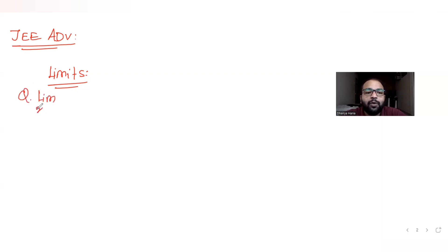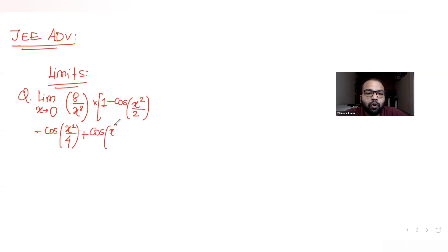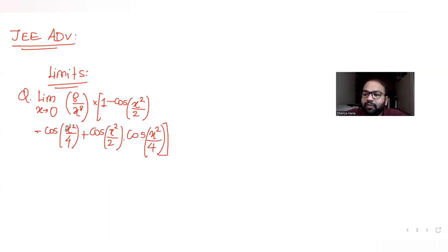We need to find the limit when x tends to zero of the expression: 8 upon x raised to 8, multiplied with 1 minus cos(x²/2) minus cos(x²/4), plus the product of the two — cos(x²/2) into cos(x²/4). This is the entire expression.